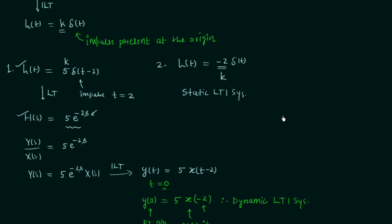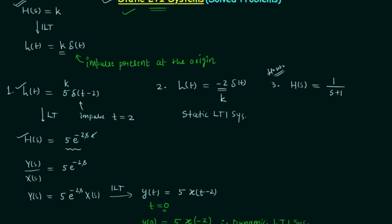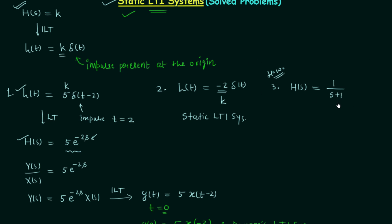If you want, you can also find the transfer function and system relationship to verify — you will get the same result. The third problem is a homework problem: H(s) = 1/(s+1). Compare it with the condition H(s) = k and post your answer in the comments. The fourth problem has H(s) = 5. Comparing with the condition, H(s) equals a constant, so the condition is satisfied and the system is a static LTI system.